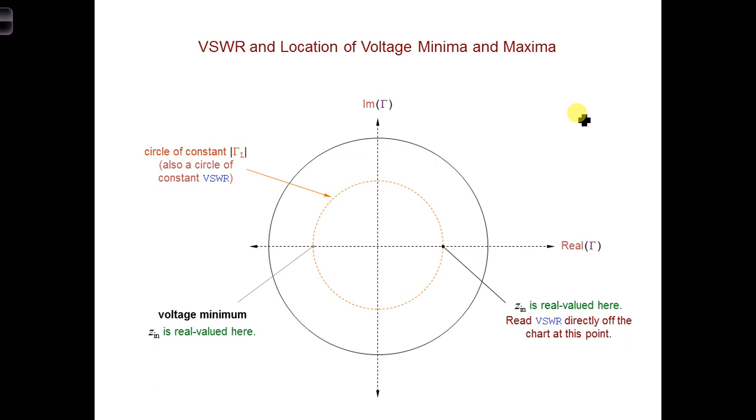Both of these can be found along the circle of constant reflection coefficient magnitude, which is this dotted orange line going around the center of the Smith chart.